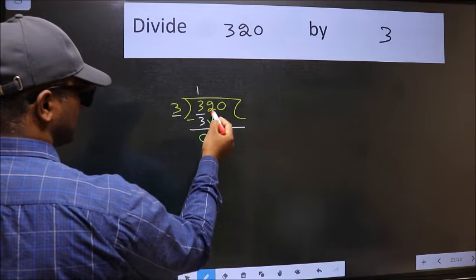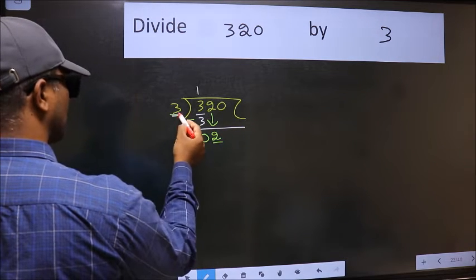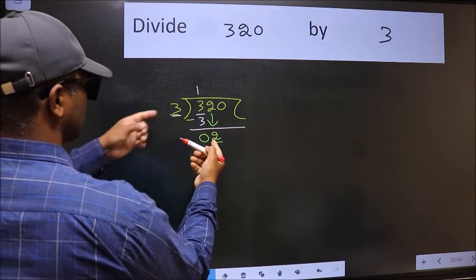After this, bring down the next number. So, 2 down. Now, here we have 2 and here 3. 2 is smaller than 3.